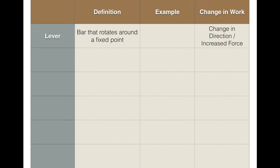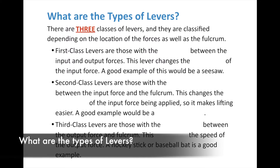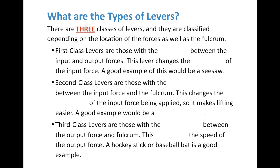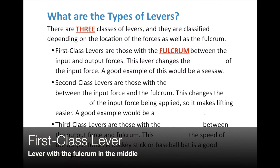Let's set up our graphic organizer. We're talking about simple machines — the lever is a bar that rotates around a fixed point, and the change in work is either changing the direction or increasing the force. There are three classes of levers depending on the location of the forces and the fulcrum. The first type is first class levers — those are levers with the fulcrum between the input and output forces. This type changes the direction of the input force.